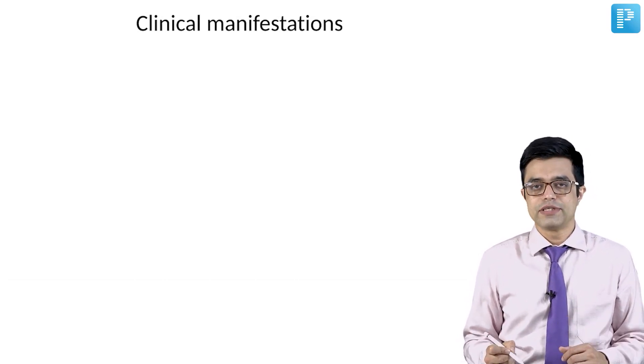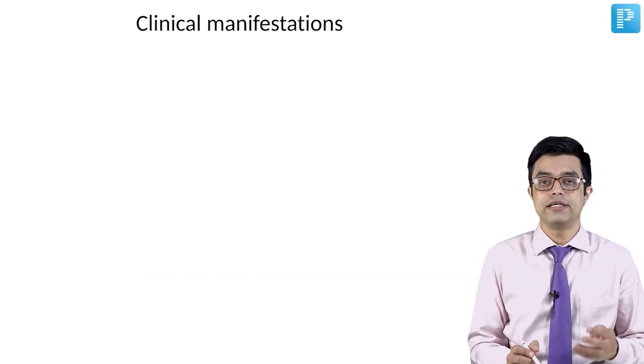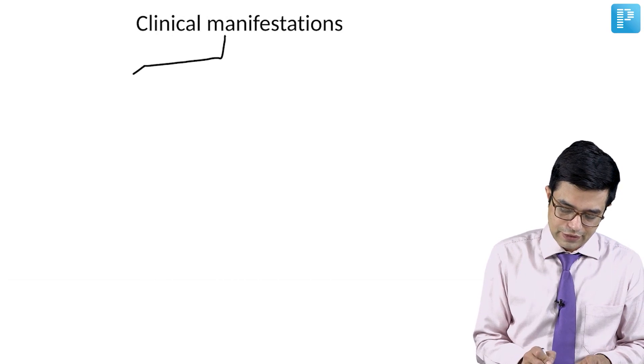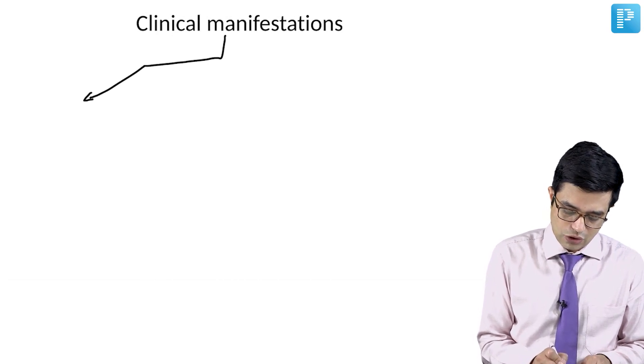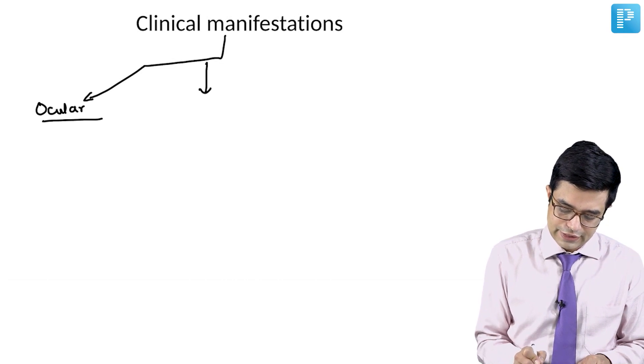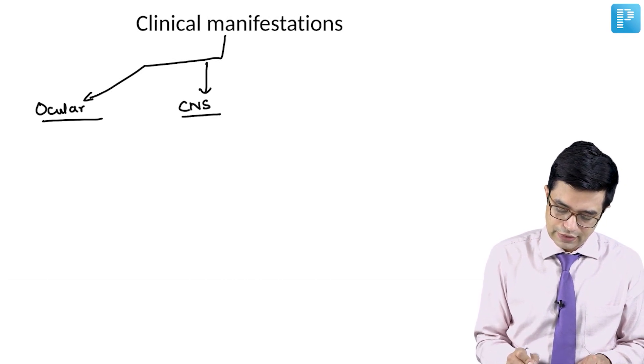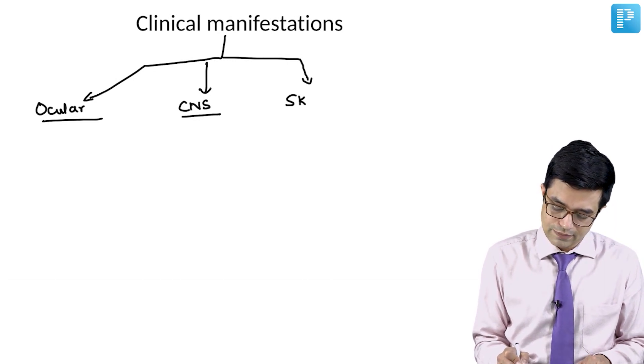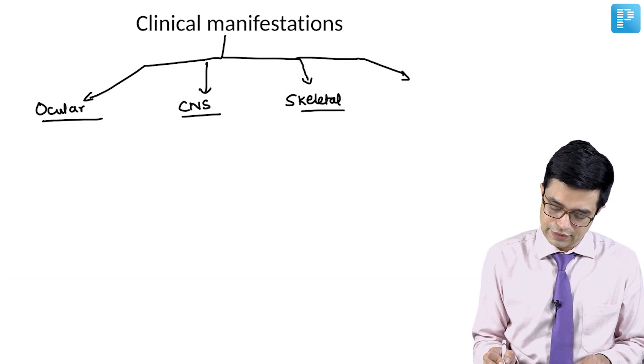The clinical manifestations of homocystinuria can broadly be subdivided into four categories. You can have manifestations like ocular features, CNS involvement. The third category of manifestations include skeletal system and fourthly there can be other features.